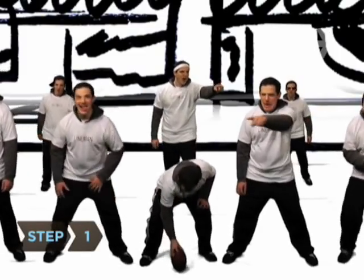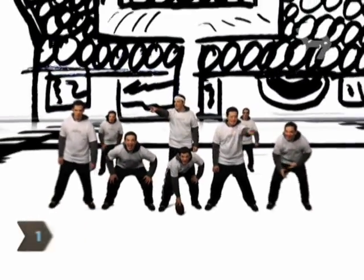Step 1. Have your offense line up with a wide receiver on each side, a left fullback, and a halfback.